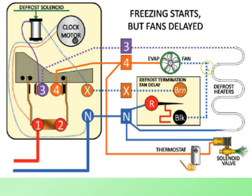As we follow this path, the neutral comes through the fan delay part of the defrost termination and fan delay. As the coil starts to cool down from the defrost, this contact now starts to slowly move back down towards the other contact, but at this point the fan is not on because it doesn't have a complete path. However, we have another 115 volts available here.